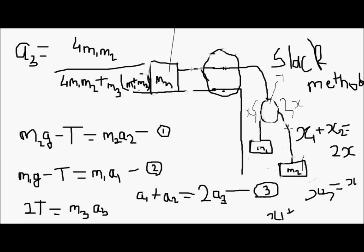When the pulley moves down by x, we get a slack of x here and a slack of x here. So we can write x1 plus x2 equals 2x. And since M3 moves by x when the pulley moves down by x, we write x3 equals x.